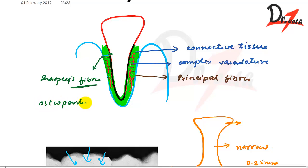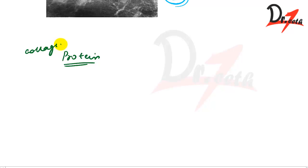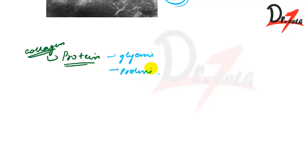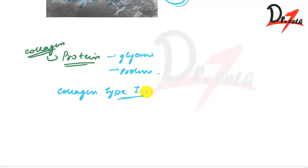Sharpey's fibers are associated with non-collagenous proteins — osteopontin and bone sialoprotein. Collagen is a protein composed of different amino acids, the most important being glycine and proline. The principal fibers are composed mainly of collagen type one.